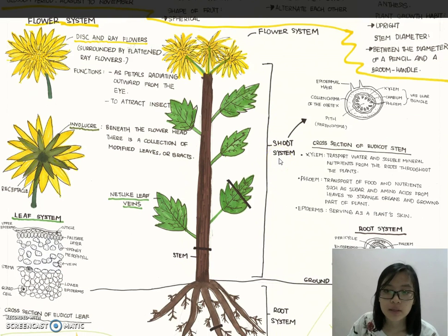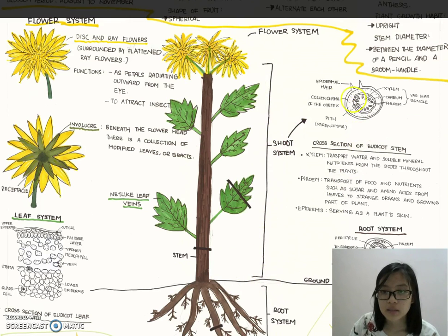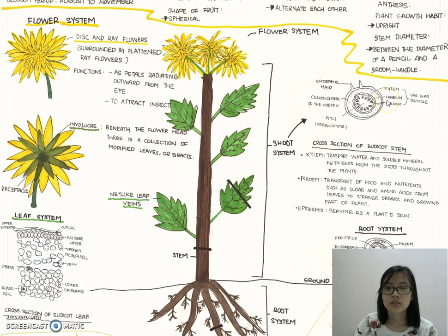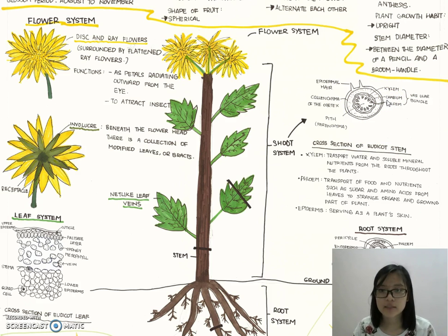Below it has the receptacles, which receive the nutrients and water from the stem. Now for the shoot system — this is the cross-section of the eudicot stem, as this plant is a eudicot plant.